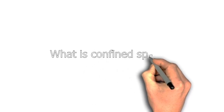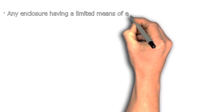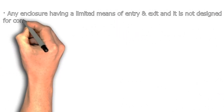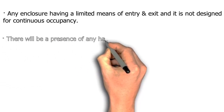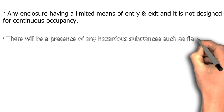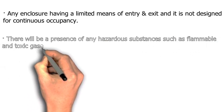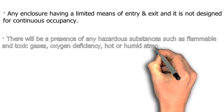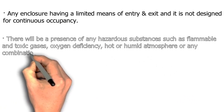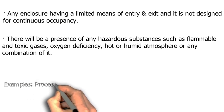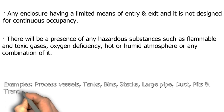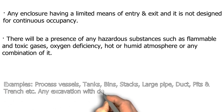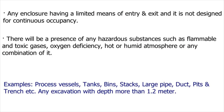What is a confined space? Any enclosure having a limited means of entry and exit that is not designed for continuous occupancy. There may be the presence of hazardous substances such as flammable and toxic gases, oxygen deficiency, hot or humid atmosphere, or any combination of these. Examples include process vessels, tanks, bins, stacks, large pipes, ducts, pits, trenches, etc. Any excavation with depth more than 1.2 meters is also considered a confined space.